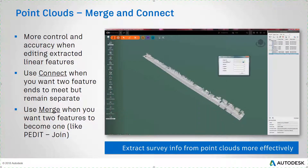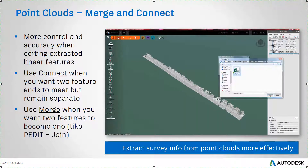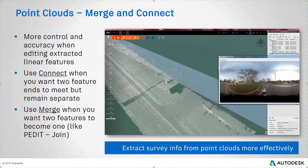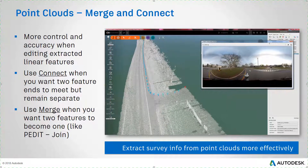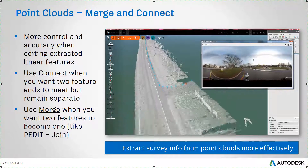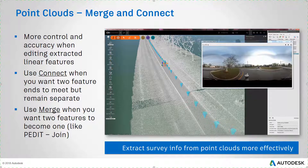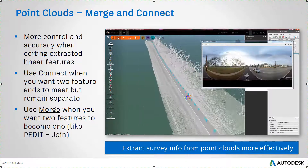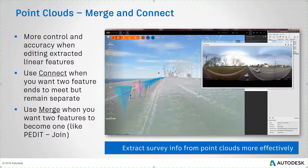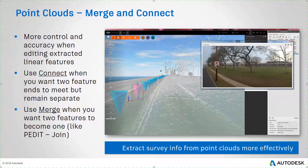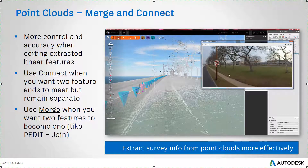In the latest release of InfraWorks, you can incorporate photographs into the point cloud data that you've included in your model. You can quickly call up these photographs based on locations in the model to assist you with identifying features that may be tricky to make out in the point cloud data. This allows you to convert point cloud data to model information more accurately and effectively.